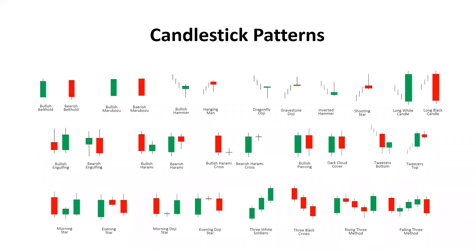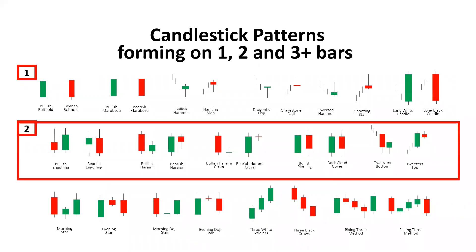And as you see here, there's quite a bit of them, and this is not even close to all of them, but you basically have two categories: reversal and continuation patterns. Patterns can form on one candle or in a combination of two, three, or more bars.